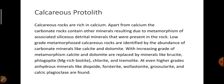Low-grade metamorphosed calcareous rocks are identified by the abundance of carbonate minerals like calcite and dolomite. With increasing grade of metamorphism, calcite and dolomite are replaced by other minerals.